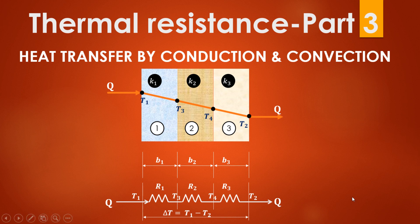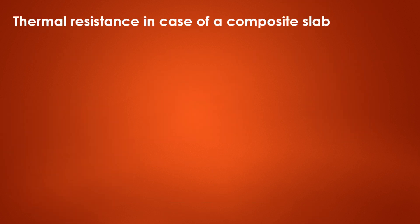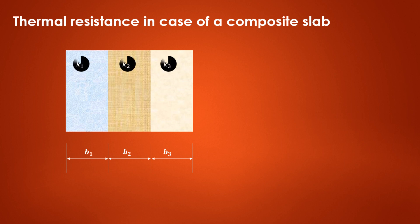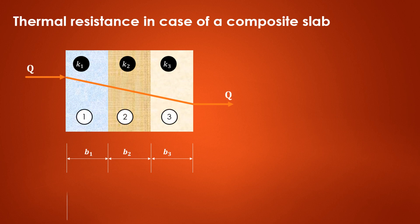In this video we'll try to understand how to find out thermal resistance in case of a composite slab. The arrangement of a composite slab is as shown here. We have taken into consideration three different materials having different widths B1, B2, and B3, and different thermal conductivities K1, K2, and K3 respectively. The heat transfer is taking place in one direction, that is the x direction.